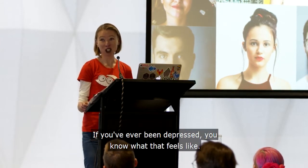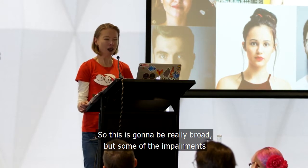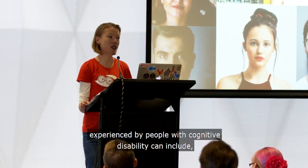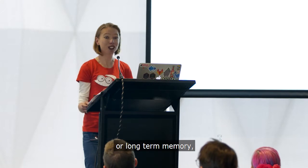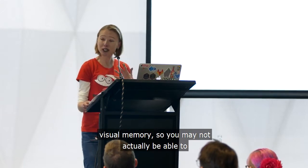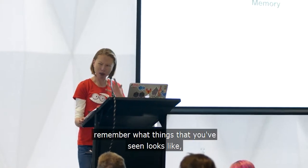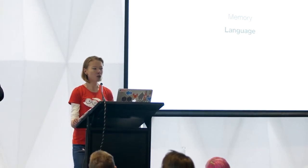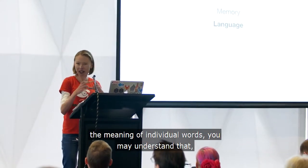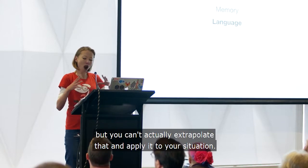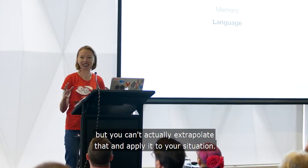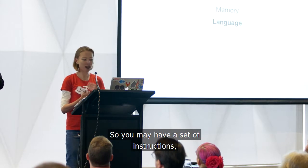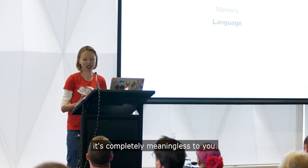So this is going to be really broad, but some of the impairments experienced by people with cognitive disability can include memory problems — short-term memory, long-term memory, visual memory. So you may not actually be able to remember what things you've seen look like, and this can cause problems with reading and writing. Language may also be affected — written text. It's not that you may not be able to understand the meaning of individual words, you may understand that, but you can't actually extrapolate that and apply it to your situation. So you may have a set of instructions that is completely meaningless to you.